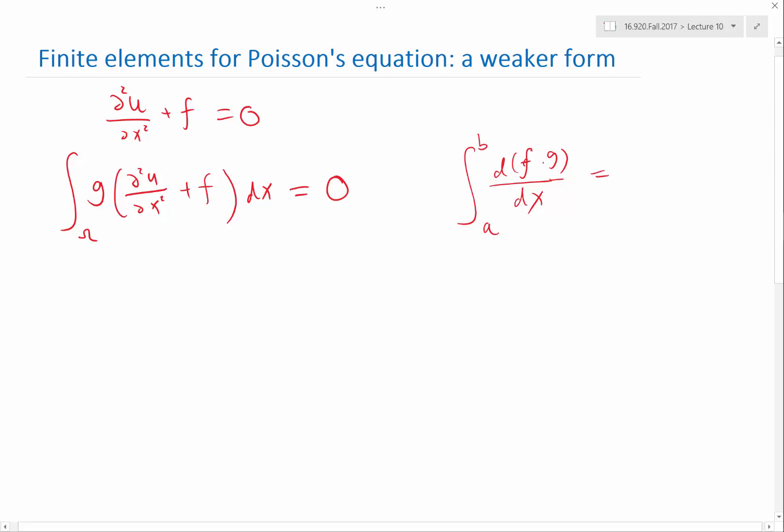is simply equal to f, g at a and b, right? Which means that if I split this term into two, I have g times f times dg dx, plus g times df dx, is equal to this.